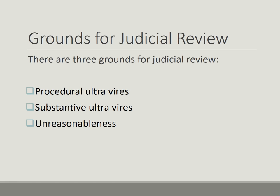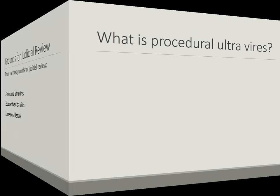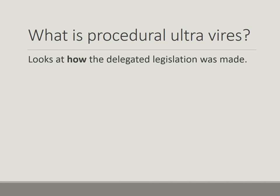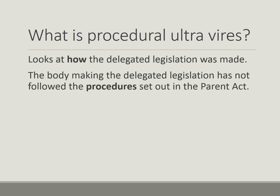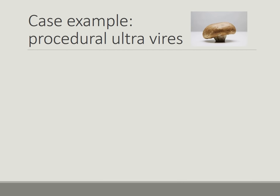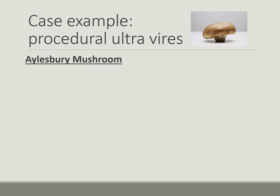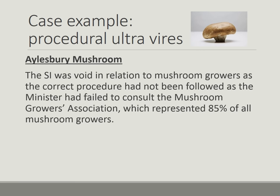There are three grounds for judicial review: procedural, substantive, and unreasonableness. Procedural ultra-vires looks at how the delegated legislation was made and whether the correct procedures in the Parent Act were followed. Each time you mention a ground for judicial review, it is important to give an example. The example of procedural ultra-vires is Aylesbury Mushroom, where the delegated legislation was held to be void as the correct procedure had not been followed, as the Minister had failed to consult the Mushroom Growers Association.